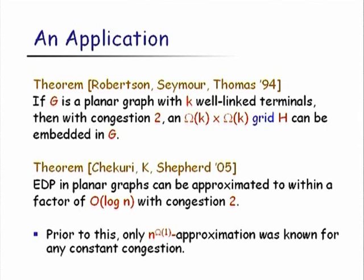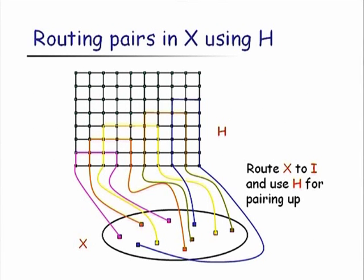An old result of Robertson, Seymour, and Thomas says that if a planar graph G has K well-linked terminals, then with congestion 2 you can embed essentially a K×K grid in that graph. Combined with the well-linked decomposition framework, this shows EDP in planar graphs is approximable within O(log n) with congestion 2 — a strong improvement over the previously known polynomial-factor approximation.